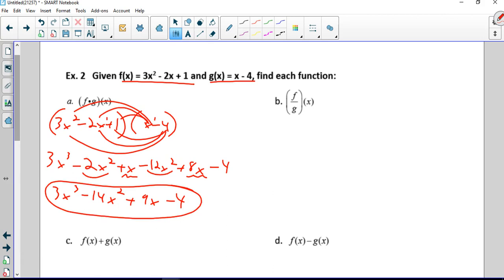f over g. 3x squared minus 2x plus 1 over x minus 4. It's simple, let's define what x cannot be.